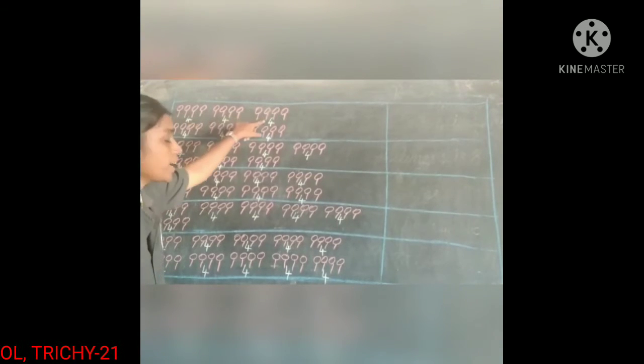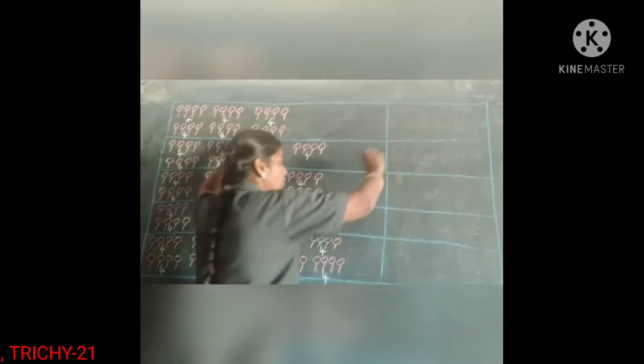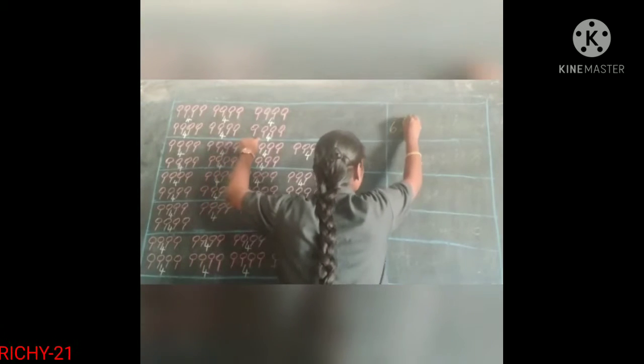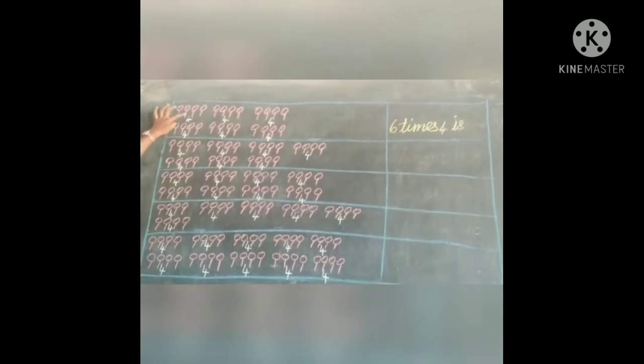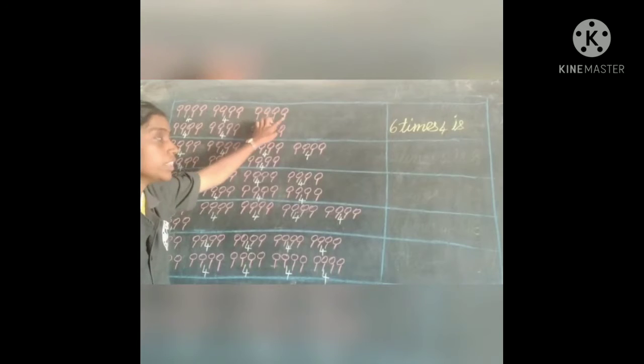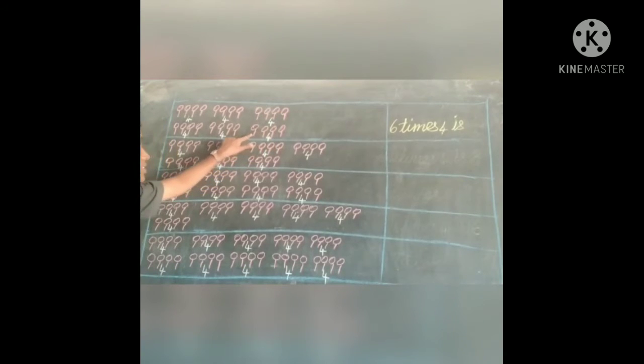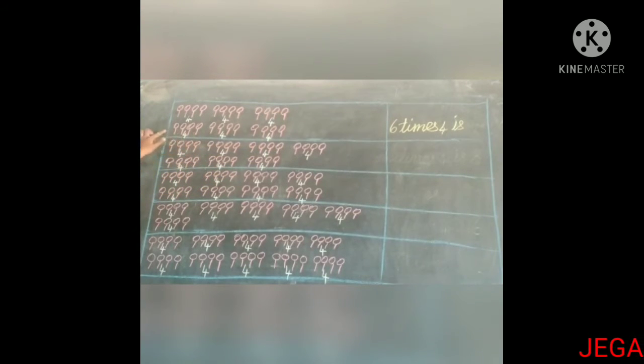So 6 times 4 is... We are going to look at the next box. Now count it — how many 4's are in the box? 1, 2, 3, 4, 5, 6 — six times. Now write: 6 times 4 is... Count all lollipops in the box: 1, 2, 3, 4, 5, 6, 7, 8, 9, 10, 11, 12, 13, 14, 15, 16, 17, 18, 19, 20, 21, 22, 23, 24. So 6 times 4 is 24.